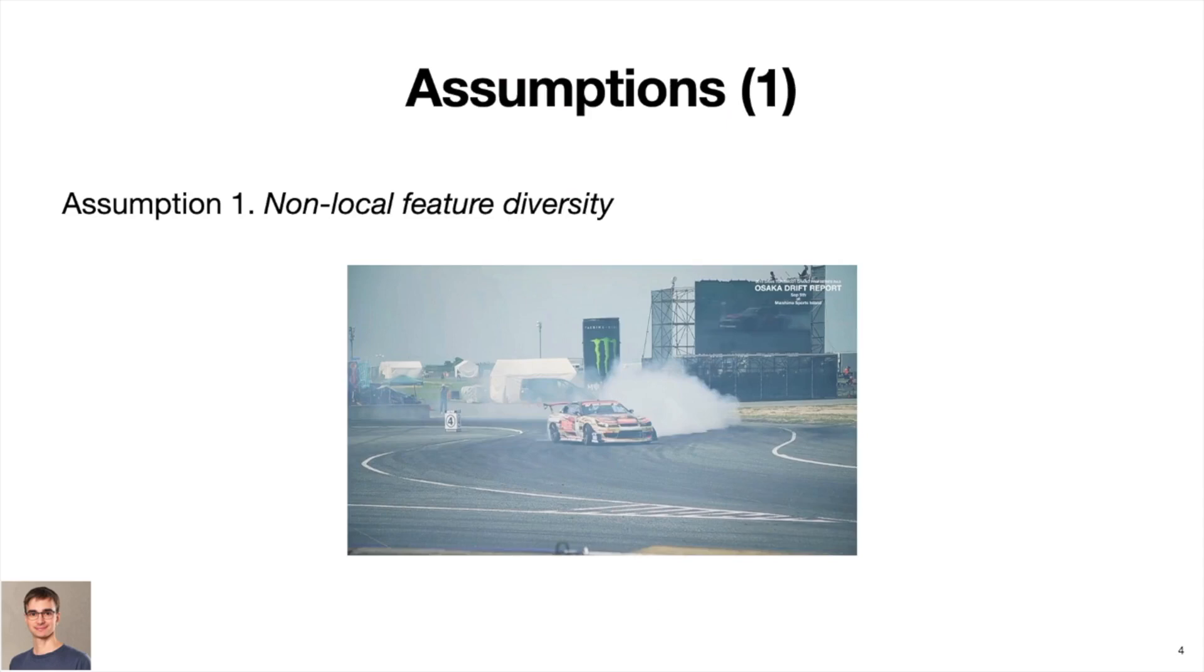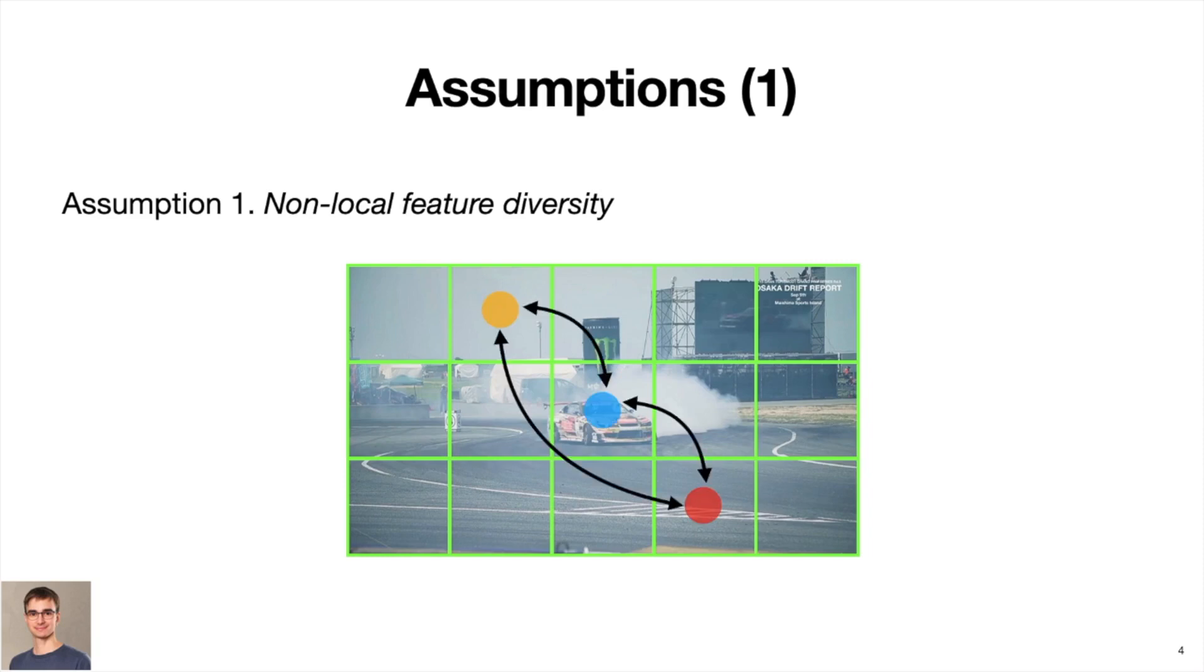Let us take an example of this frame extracted from a car racing video sequence. We discretize the image plane with an overimposed coarser feature grid typical to fully convolutional neural networks. This first assumption implies that our feature representation extracted from one grid cell should be different from a feature from another cell, say in terms of cosine distance.